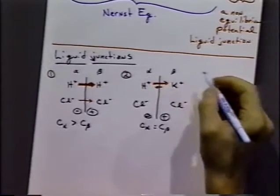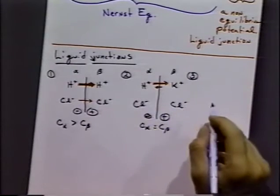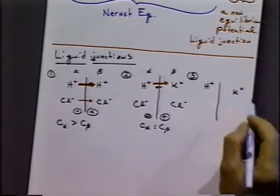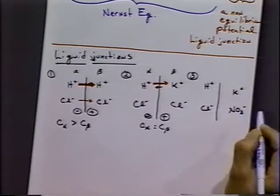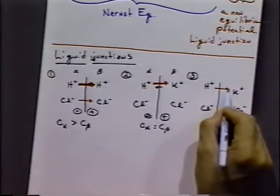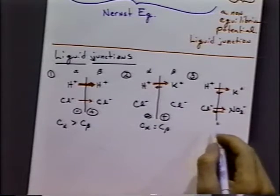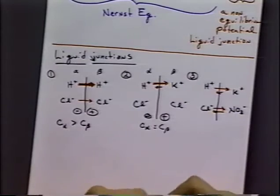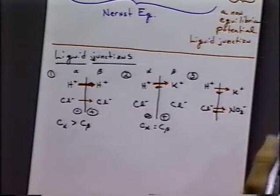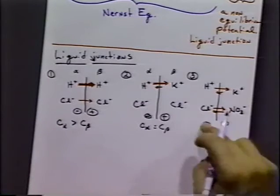The third type of liquid junction potential is when it's not one of the other two. An example would be hydrogen ions on one side, potassium ions on the other side, chloride ions on one side, and nitrate ions on the other side — so it doesn't really matter what the concentrations are. In this case, we'll get a transference back and forth, and it will turn out that the chloride and the nitrate have approximately the same mobilities, whereas the hydrogen ion is still much more mobile than the potassium ion. So again, we would get a negative charge on one side and a positive charge on the other side.